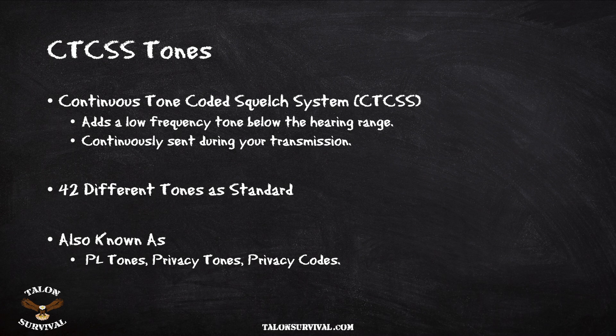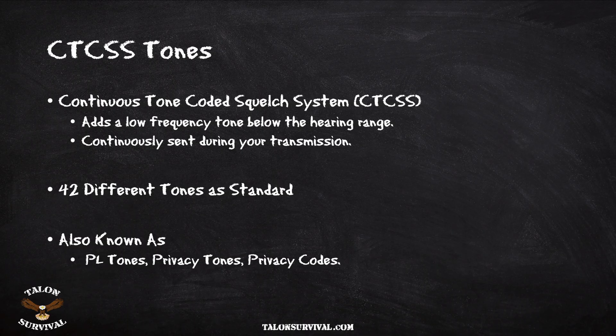In a nutshell, CTCSS adds a low-frequency tone — a sub-audible tone, meaning it's below the hearing range. So when you transmit your audio, this tone is included but it's not heard by the human ear. There are 42 different tones as a standard. You will find some radios have more and some have less, but in general the interoperability standard is 42 different tones.